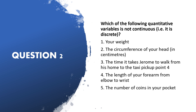Next question: 'Which of the following quantitative variables is not continuous?' Quantitative variables are either continuous — arising from the measuring process — or discrete — arising from counting. The options are: your weight, circumference of your head, the time it takes Jerome to walk from his home to the taxi pickup point, and length of your arm.